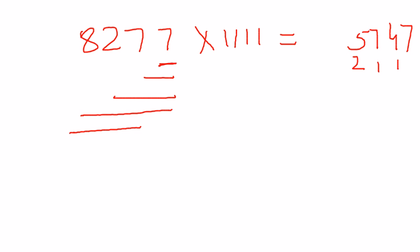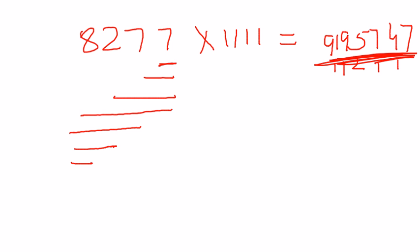Continuing in decreasing order: 7 + 2 + 8 = 17 plus 2 carry = 19, write 9 with 1 carry. Two bars: 2 + 8 = 10 plus 1 carry = 11, write 1 with 1 carry. Last bar: 8 plus 1 carry = 9. The answer is 9190927. It didn't even take 3 seconds to calculate 8277 × 1111 — this trick saves a lot of time.